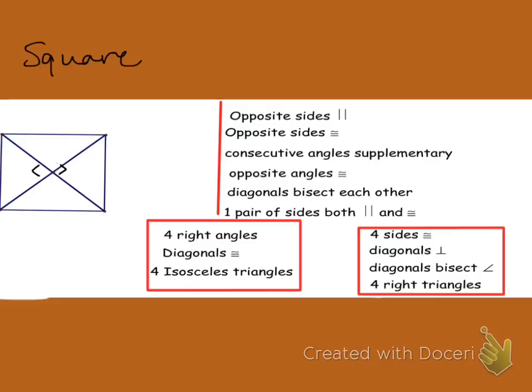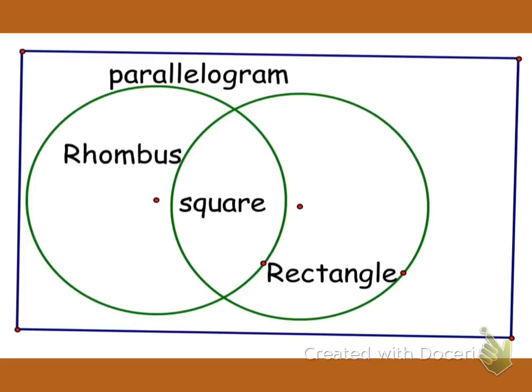If you look at it as a Venn diagram, parallelogram encompasses all of this. Then you have your rhombus and your rectangle, with a square that is both a rhombus and a rectangle. So your square has all the overlapping properties. The rectangles overlap a little bit with the rhombus, but the parallelogram encompasses everything. This Venn diagram shows how it breaks down between rhombus, square, and rectangle. If you have any questions, feel free to let me know tomorrow in tutoring or during class. Have a great night.